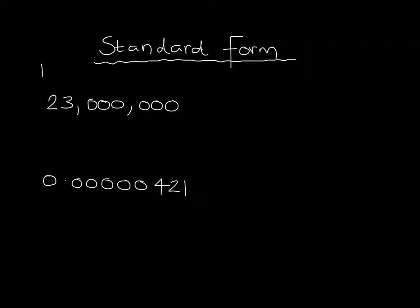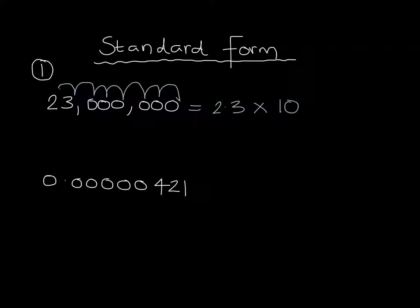For example, if we take the number 23 million, we're going to write it in standard form by writing it as 2.3 multiplied by 10 to a particular power. To work out what that power is, I'm going to place the decimal point here at 2.3 and count 1, 2, 3, 4, 5, 6, 7 — how many jumps it takes to reach the end of the number. So in standard form, 23 million is 2.3 multiplied by 10 to the power of 7.